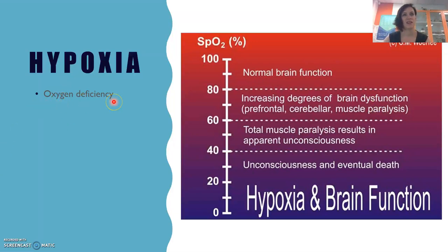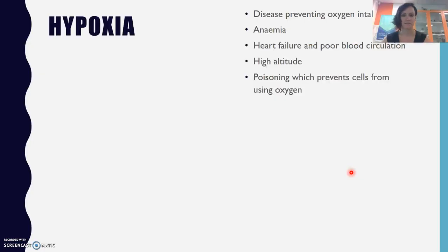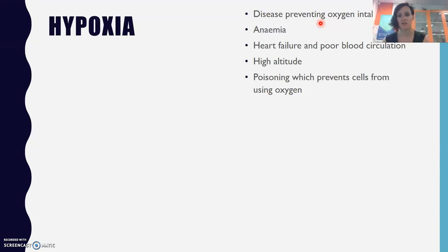Hypoxia is considered oxygen deficiency. Lots of different things can cause it: disease preventing your body from using oxygen — for example, smoking having those chemicals bind to your hemoglobin, decreasing your ability to use the oxygen coming into your lungs. The oxygen can enter but it can't get placed appropriately because the binding sites are occupied.